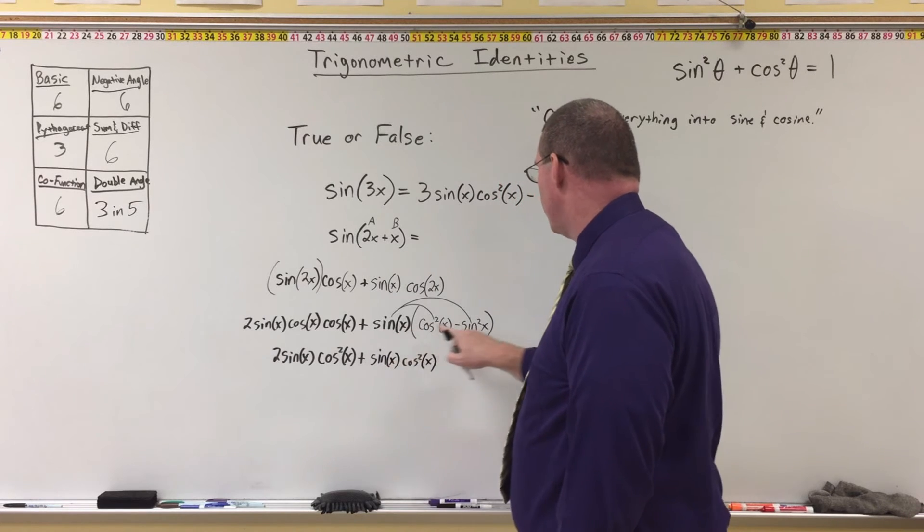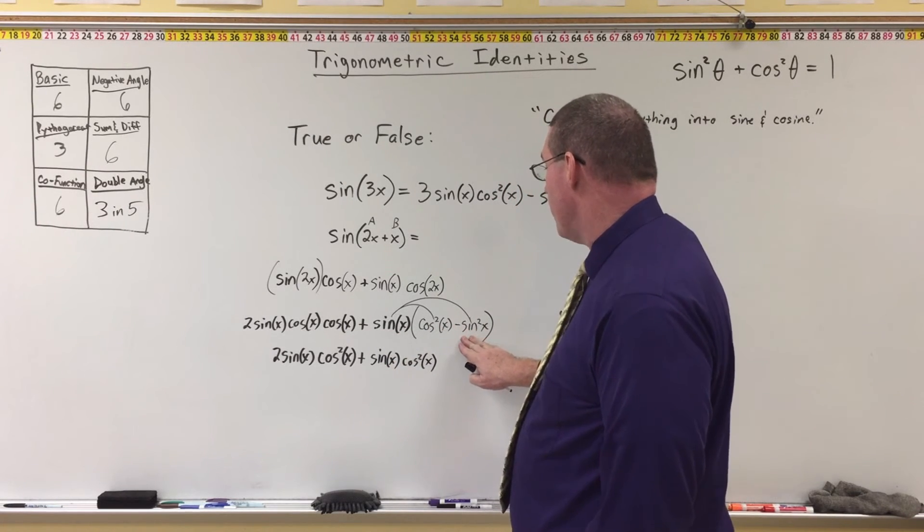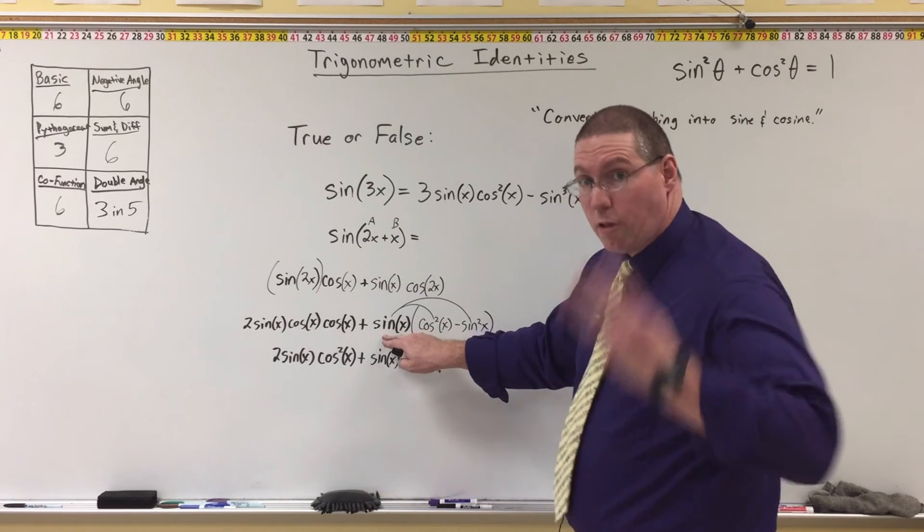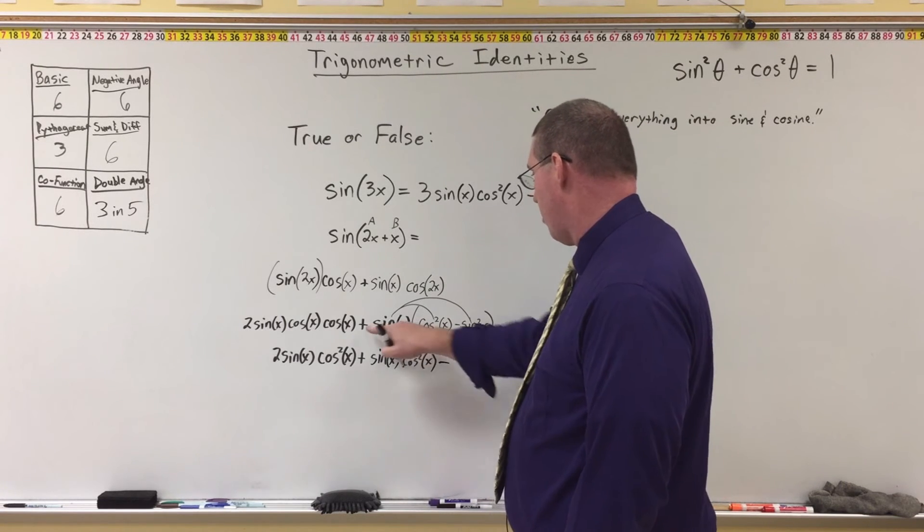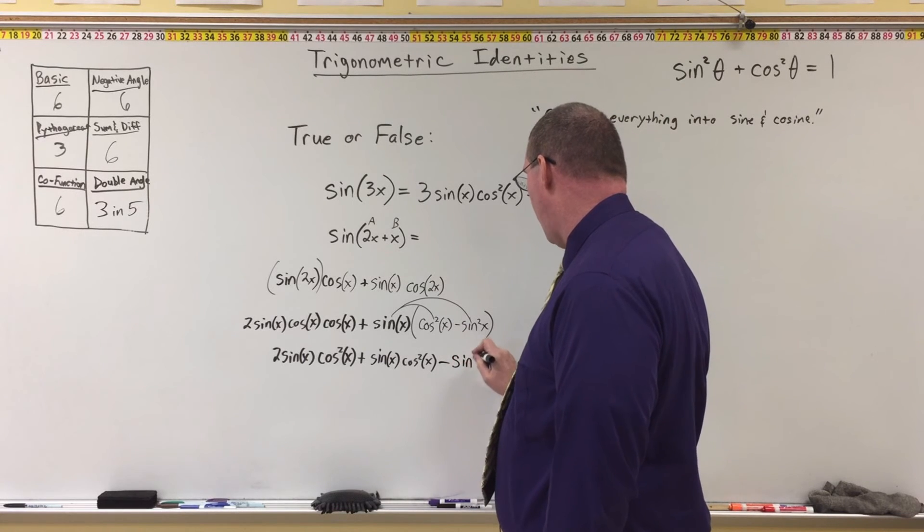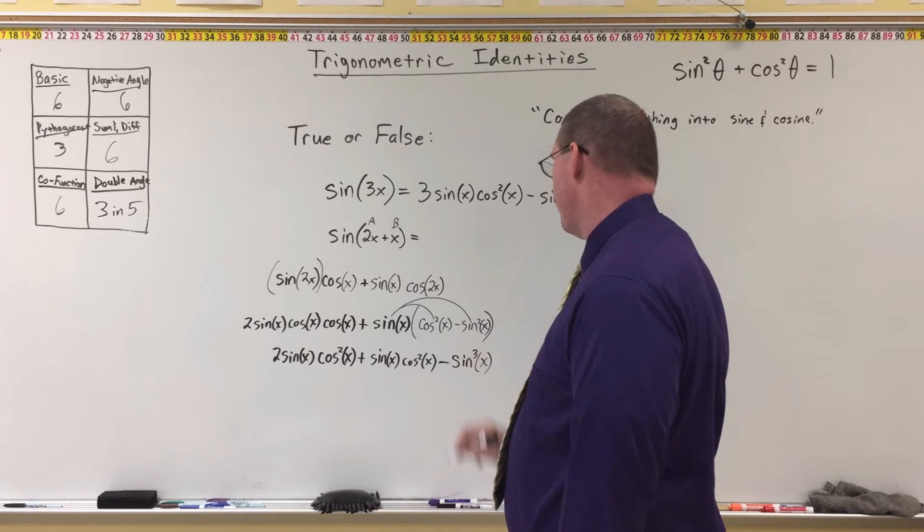Now, sine of x times negative sine squared. This is 2 sines. This is minus sine times sine. So now we're going to have sine times sine times sine. That's 3 sines. And it's minus, because this is positive and this is negative. Minus sine cubed. There's 3 of them. Oh, I should have put parentheses here. Sorry. Of x. There we go.